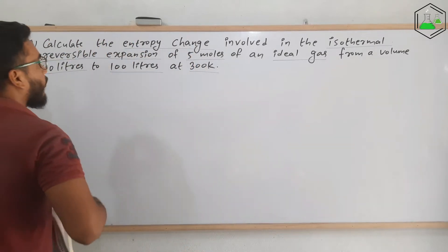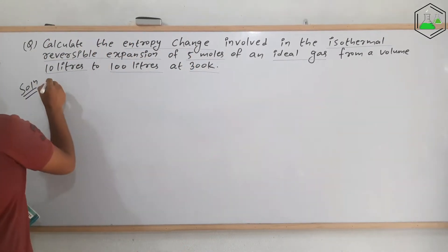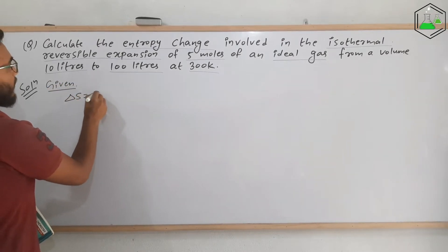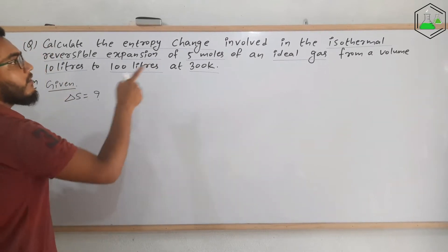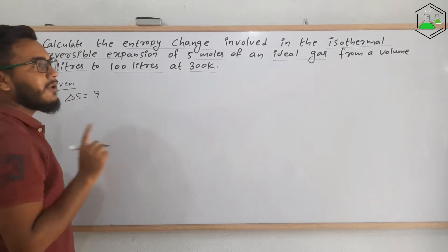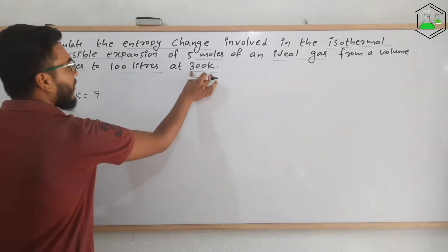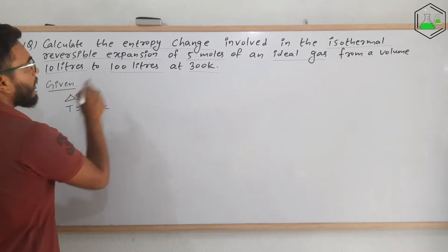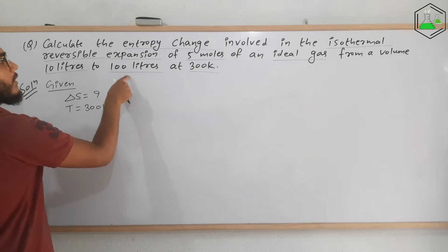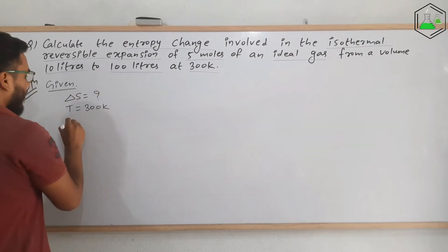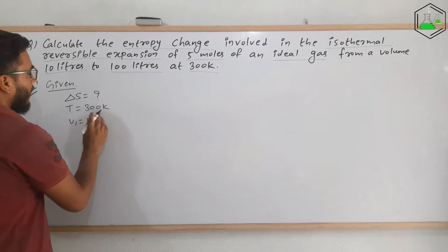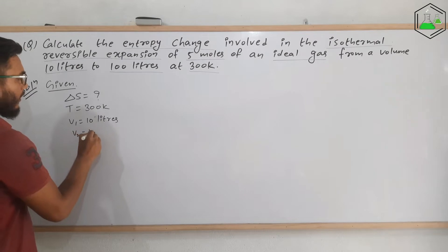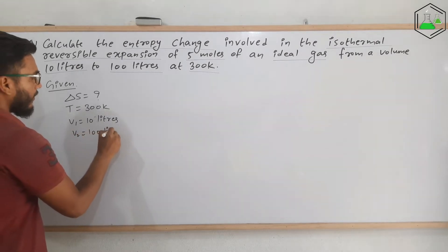So first of all, we need to write what are the given quantities. Given: we need to calculate the change in entropy, that is ΔS = ? This is an isothermal process, which means the temperature will remain constant, and the temperature is also given. T = 300 Kelvin. V1 is given — initial volume is 10 liters — and V2 is given to be 100 liters. The gas is expanding.